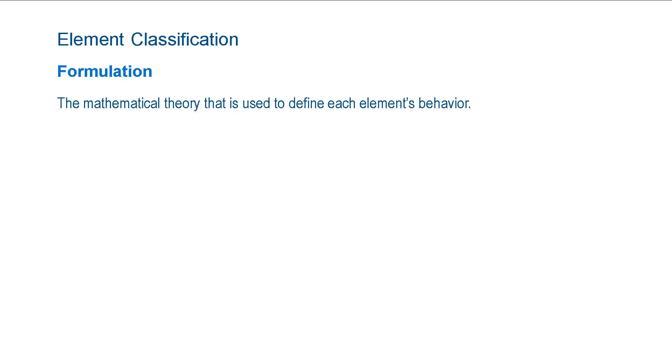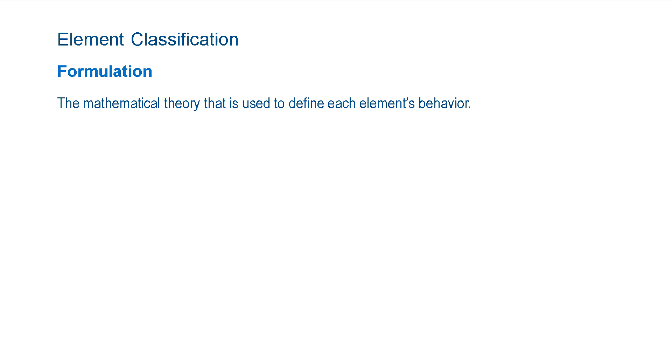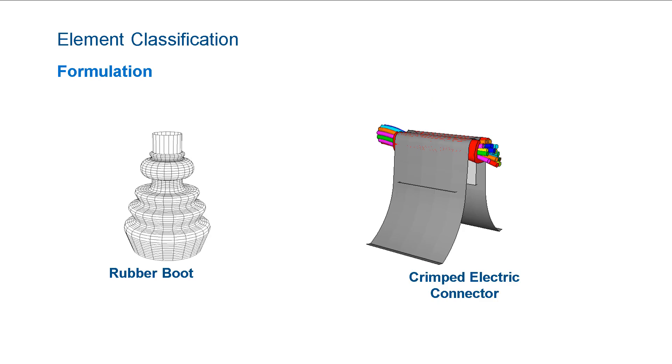Next, an element's formulation refers to the mathematical theory used to define the element's behavior. Depending upon the object you are modeling, you may need to choose an element with a specific formulation. For example, this rubber boot and the crimped electric connector both benefit from elements with a special formulation.